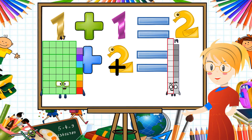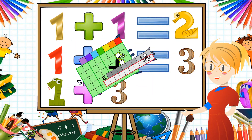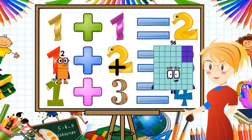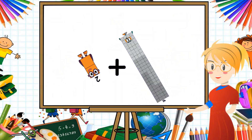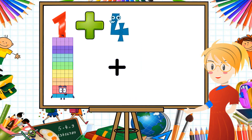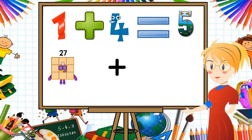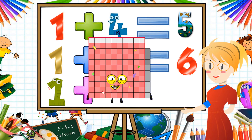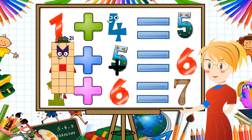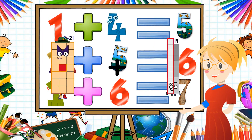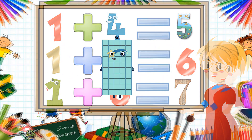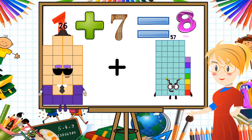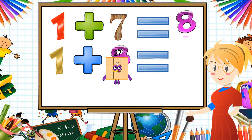47 plus 19 equals 66. 2 plus 92 equals 94. 27 plus 92 equals 119. 21 plus 29 equals 50. 26 plus 1 equals 27.